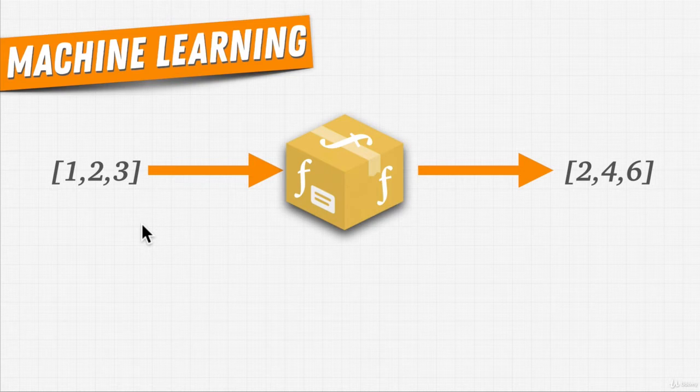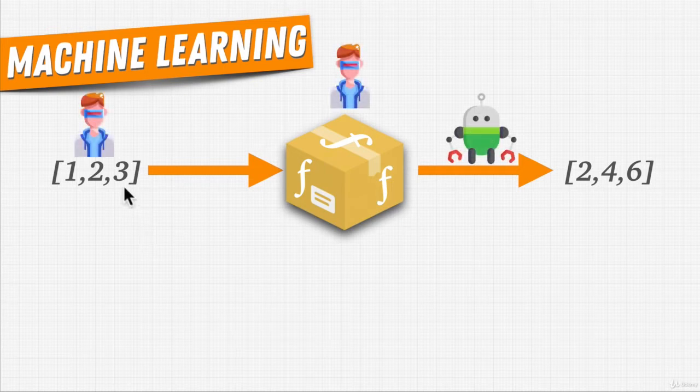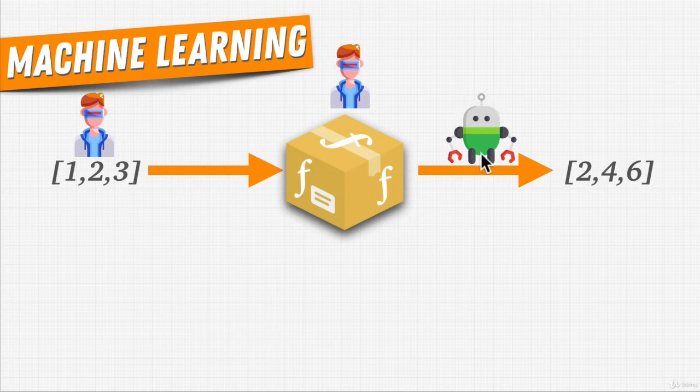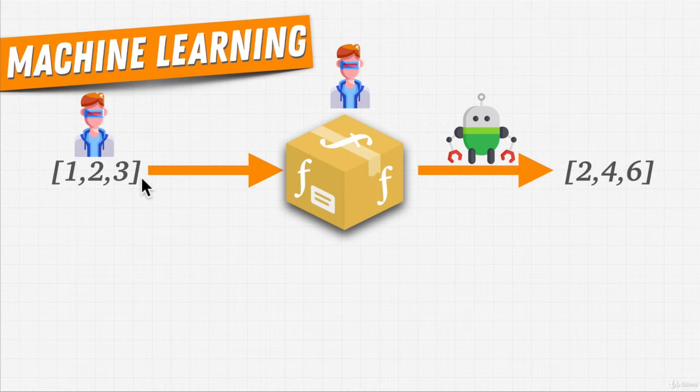And often, our programs are procedural. That is, we have if this, then that, do this, then this type of conditions. We tell the computer what to do. We write, as programmers, the input and the function. And all the computer does is actually just calculate, using the input and the function, the output. And it can do that really, really fast for us, instead of having a human do something when, let's say, a list is millions of items long.